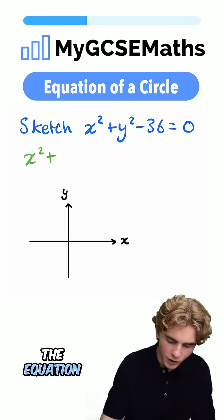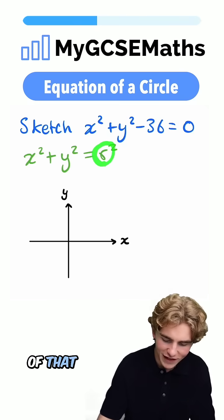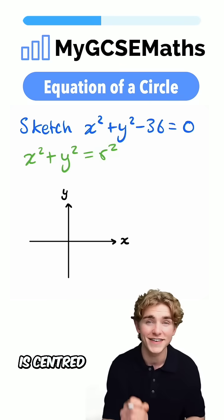The general format for the equation of a circle is x² + y² = r², where r is the radius of that circle and the circle is centered at the origin.